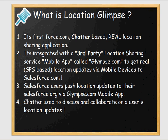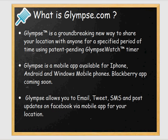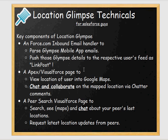To handle the mobile GPS functionality, we have integrated with a third-party location sharing mobile application called Glimpse.com. The Glimpse.com mobile app is available for iPhone, Android, and Windows Mobile phones, with a BlackBerry version coming soon. Using the Glimpse mobile app, one can easily record their location and post it as an email, tweet, or SMS. We use the email option to send location data to the Salesforce inbound email handler.